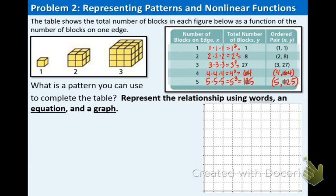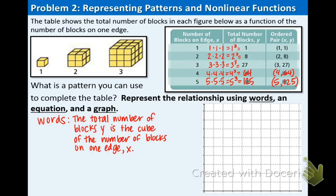Let's write the words first, then the equation, and then figure out the graph. How do we find the total number of blocks? We multiplied the number of blocks times itself 3 times. So in words: the total number of blocks y is the cube of the number of blocks on one edge x. That sentence represents the relationship. Now for the equation: what do we do with each x value? We cube it. So our equation is y equals x to the 3rd, or x cubed. That is the equation that represents the blocks.